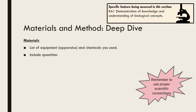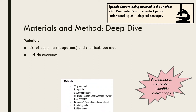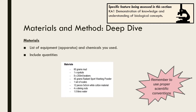As well as listing all of the chemicals used, make sure you include quantities. When listing equipment, also be as specific as possible. For example, rather than simply writing 'beaker', include the size, such as '250mm beaker'. Here is an example of a materials list with all the quantities specified.